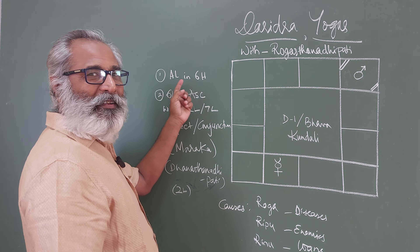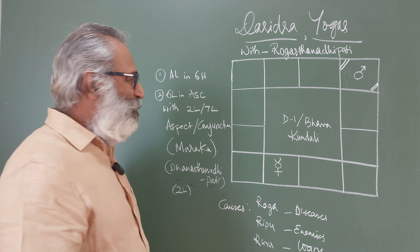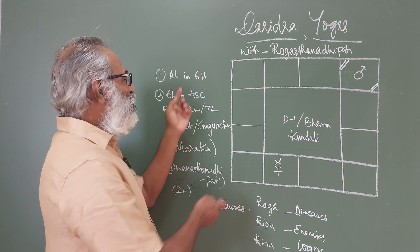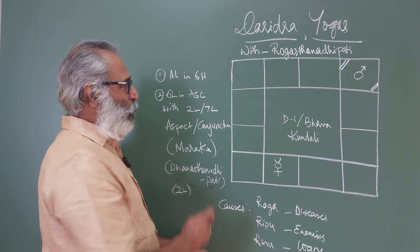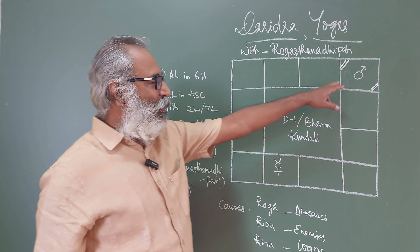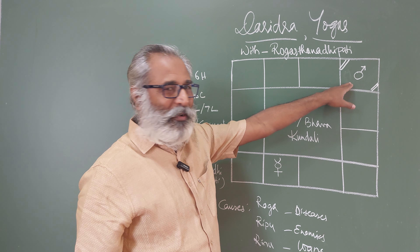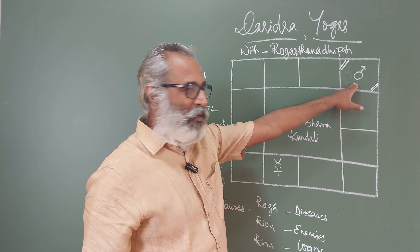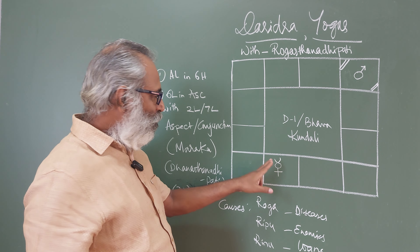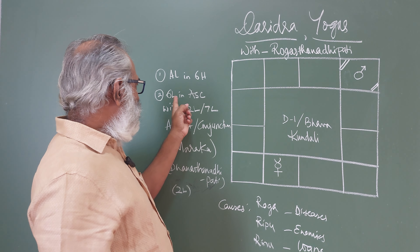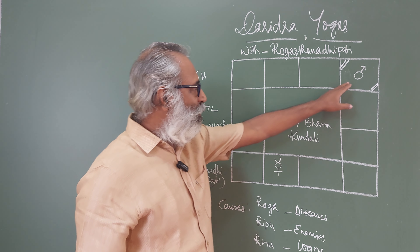Ascendant Lord in the sixth house — I am teaching as your personal professor. Here I have taken the Ascendant of Gemini. So Ascendant Lord Mercury goes to the sixth house. Sixth Lord in the Ascendant — that creates a Parivartana Yoga.